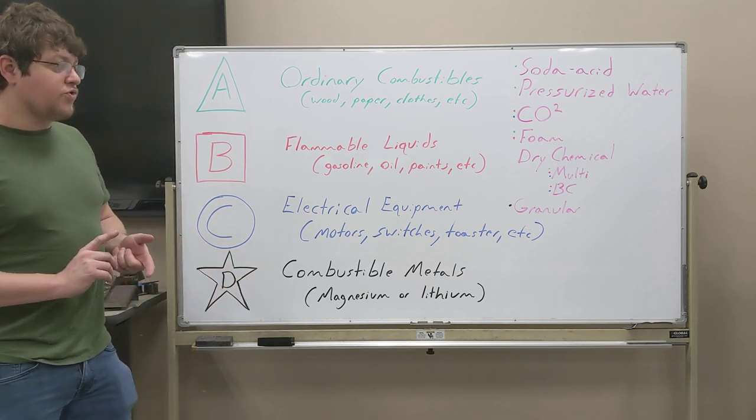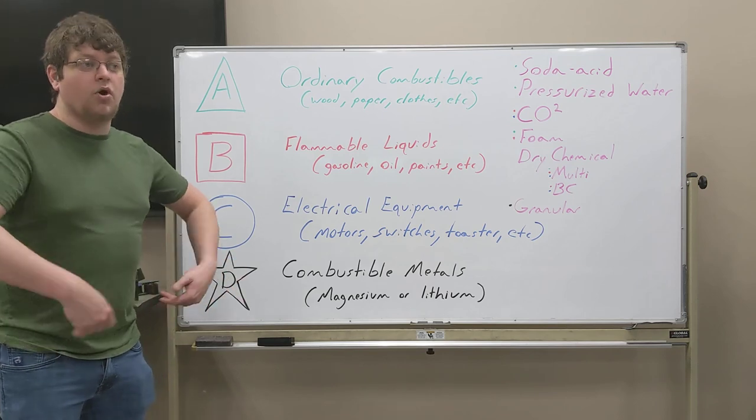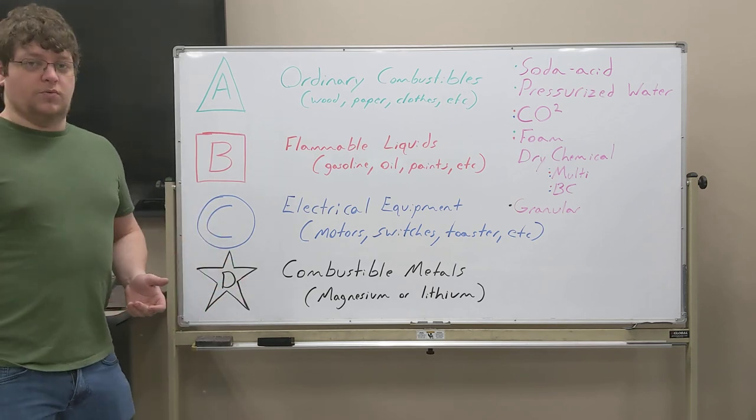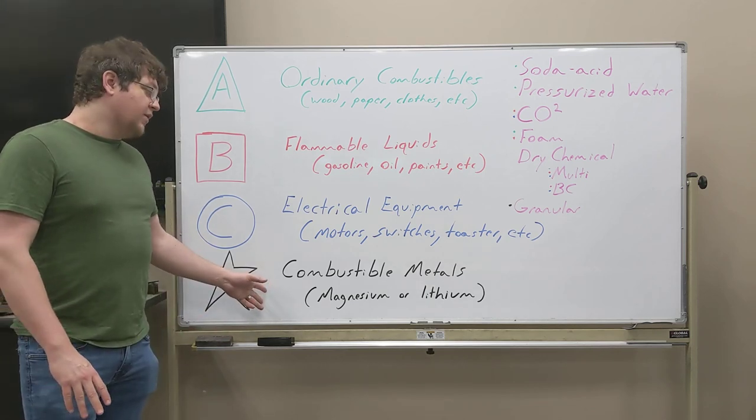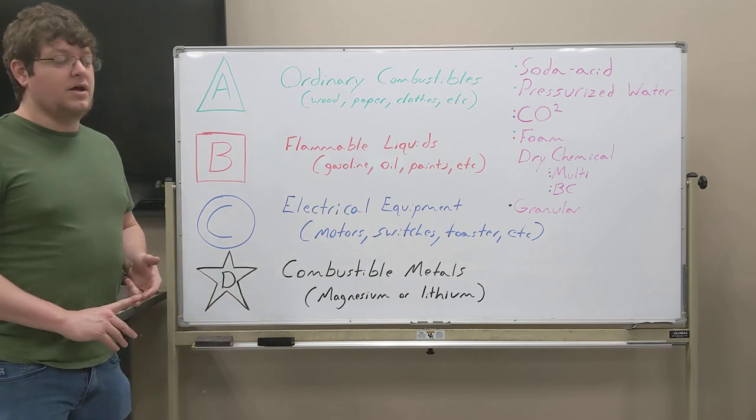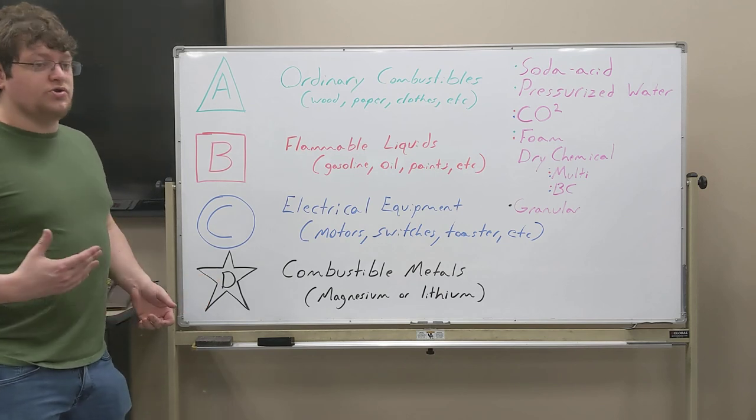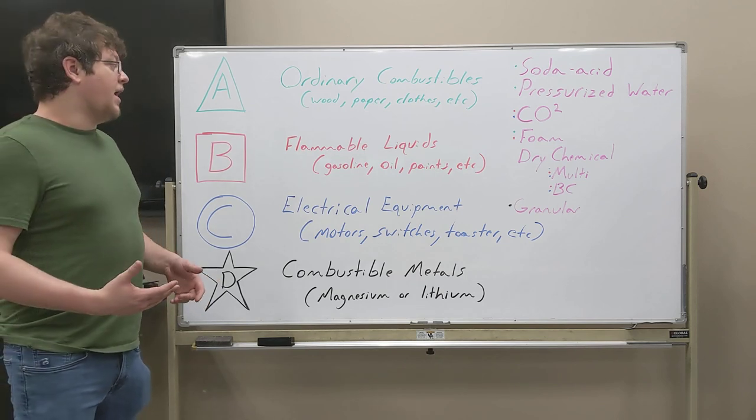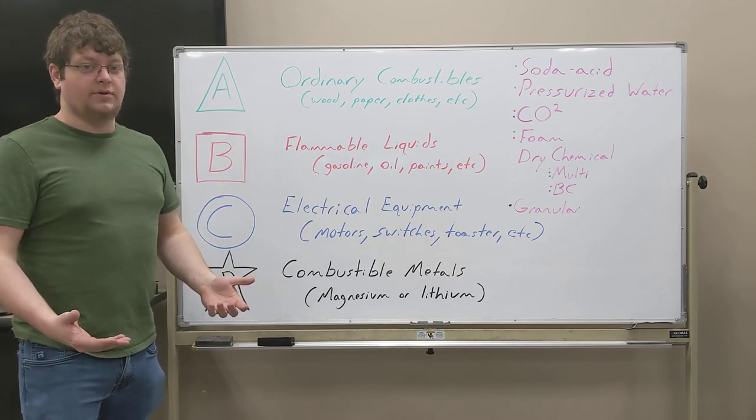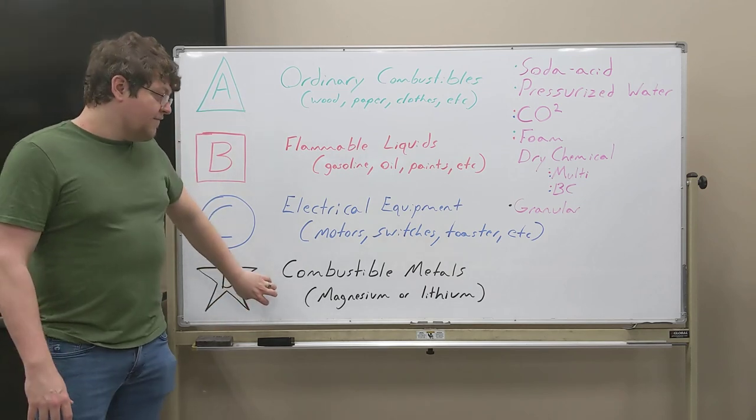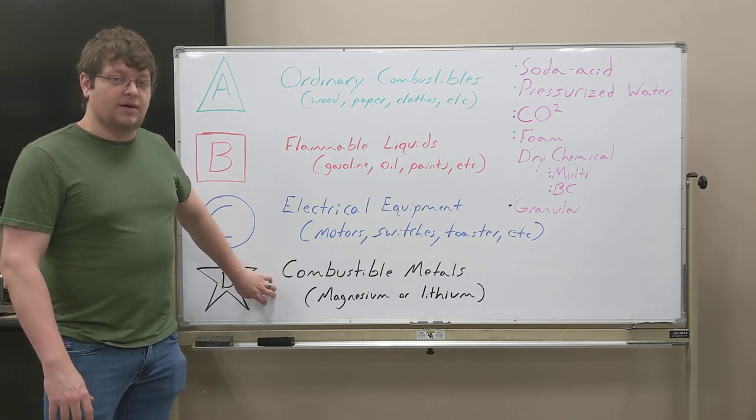Class D is a dry chemical granular. It's like a powder that you throw on it. It is the only one that deals with combustible metals. Combustible metals react to a lot of different things. They can react to the moisture in the air. They can react to too much heat. They can react to certain chemicals that are in these and actually make them more eruptive. So that's why they have a very specific formula to stop combustible metals.